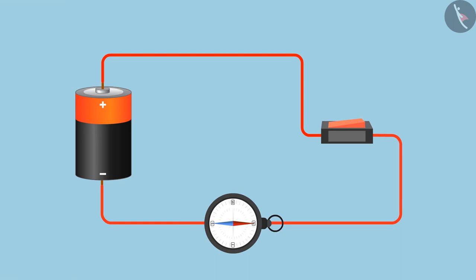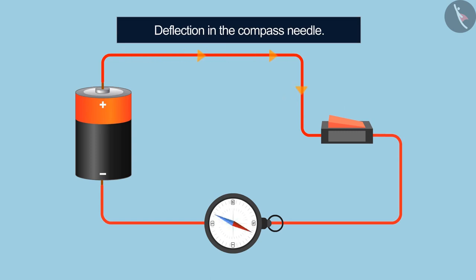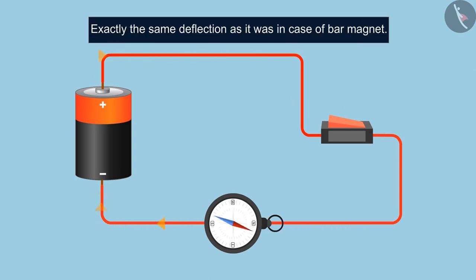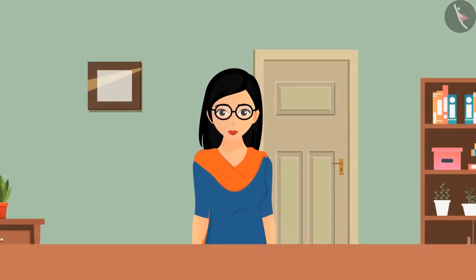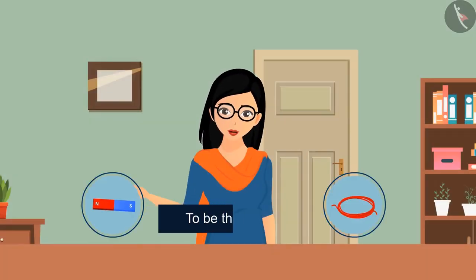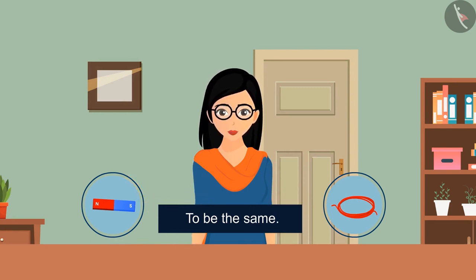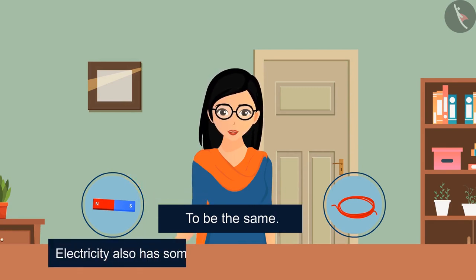As soon as we put on the switch, we see a deflection in the compass needle, exactly the same deflection as it was in the case of a bar magnet. We can consider the bar magnet and the current carrying wire to be the same and it would be fair to say that electricity also has some magnetic effects on the surroundings.